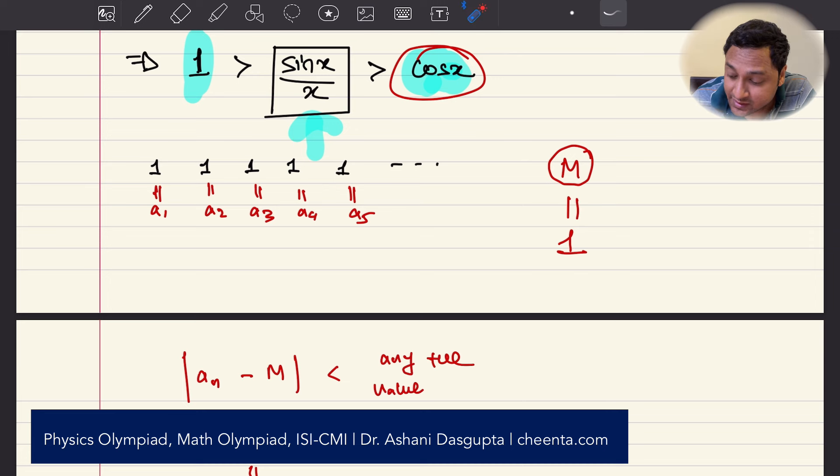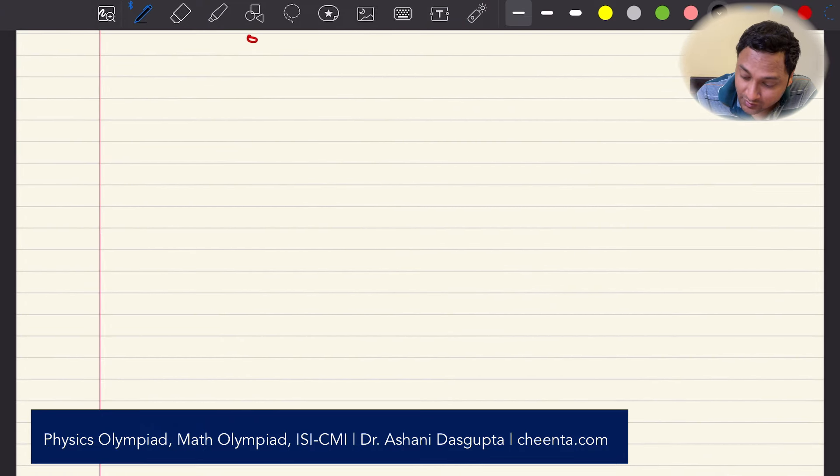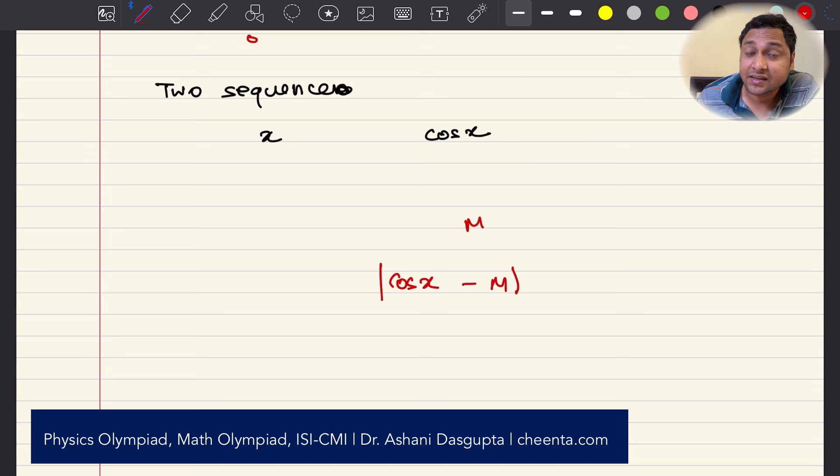The situation for the right-hand side which is cosine of X is a little bit more interesting. There are actually two sequences involved. So you are actually studying two sequences. One sequence is of X and the other sequence is of cosine of X. Now what you want to do is you want to find again a magic number M such that cosine of X minus M can be made arbitrarily small. Can be made as small as you please.